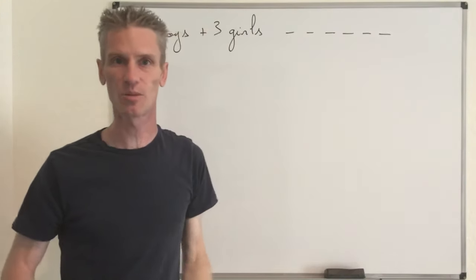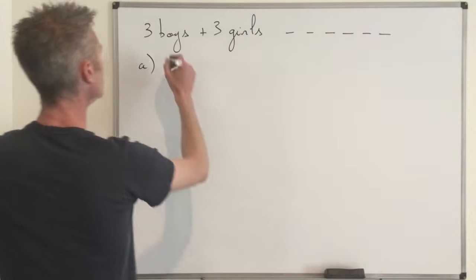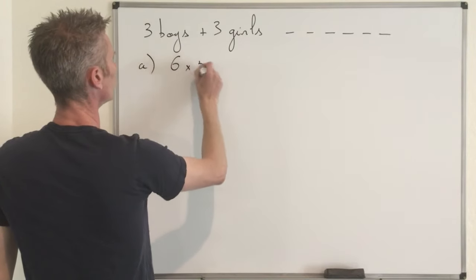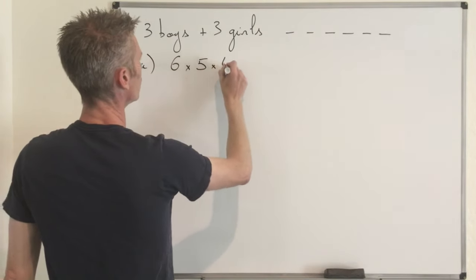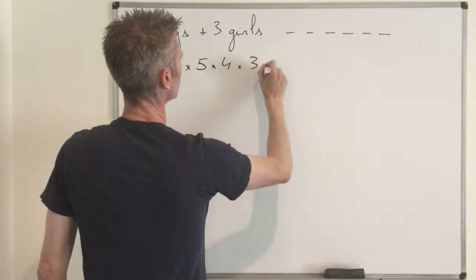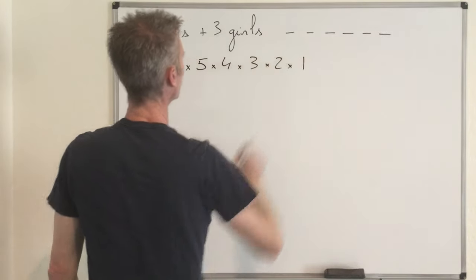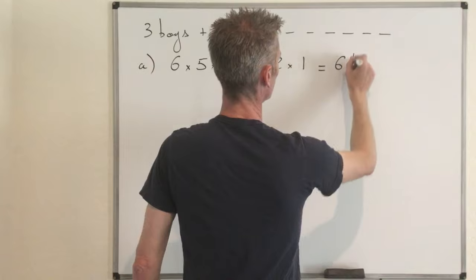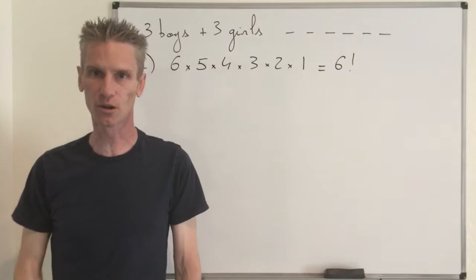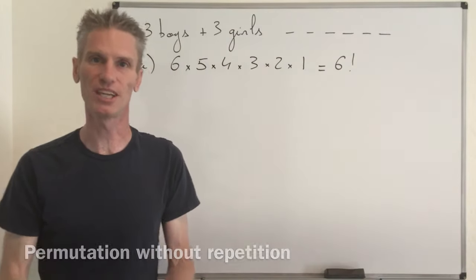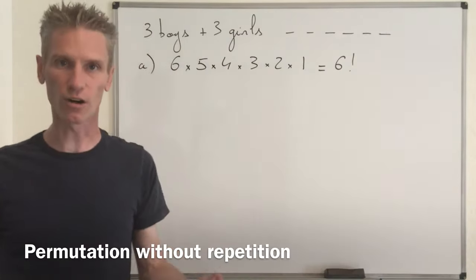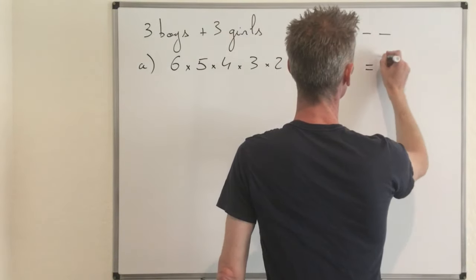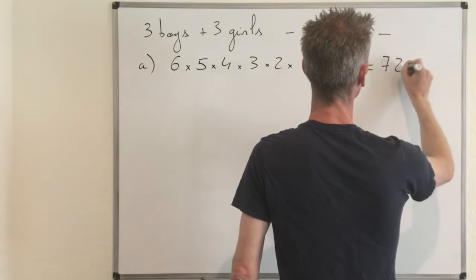That's a basic example of permutation. In this case, the total number of seatings is 6 × 5 × 4 × 3 × 2 × 1, which you can write as six factorial. That's a basic example of permutation without repetition. If you compute that number explicitly, you would find 720.